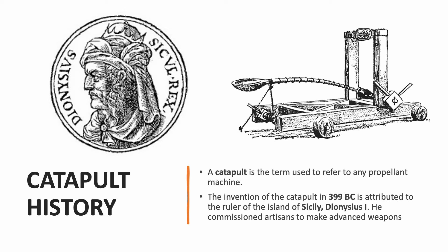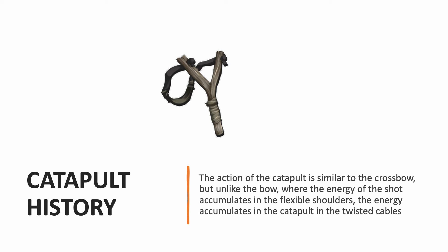He commissioned artisans to make advanced weapons. The action of the catapult is similar to the crossbow, but unlike the bow, where the energy of the shot accumulates in the flexible shoulders, the energy accumulates in the catapult in the twisted cables. In the 1840s, the invention of vulcanized rubber allowed the making of small handheld catapults, either improvised from Y-shaped sticks or manufactured for sale — both were popular with children and teenagers. These devices were also known as slingshots in the USA.